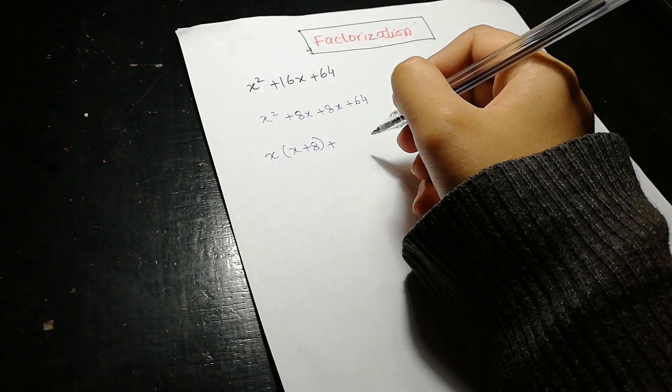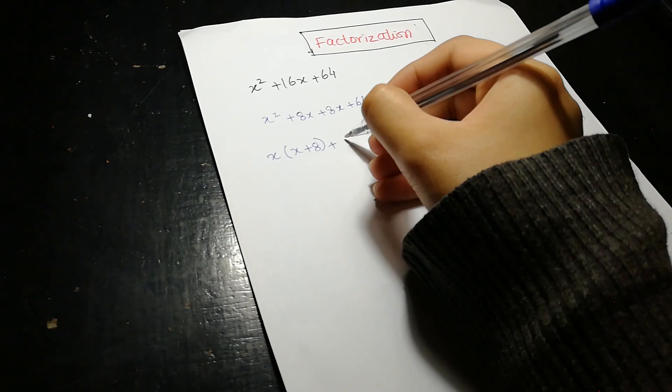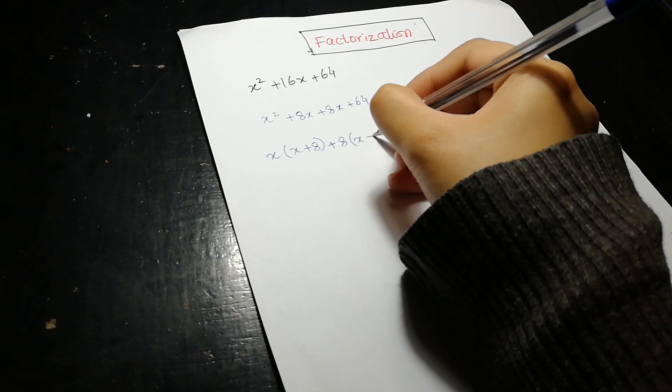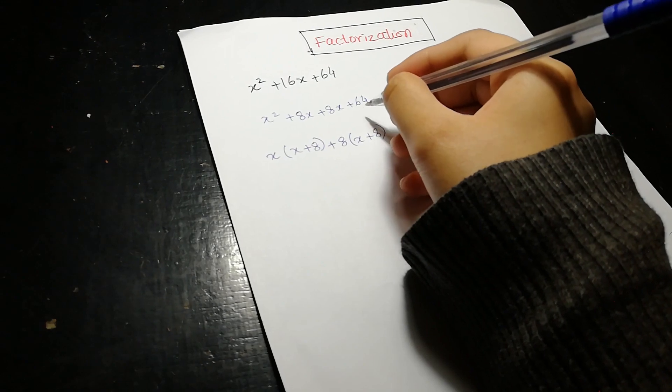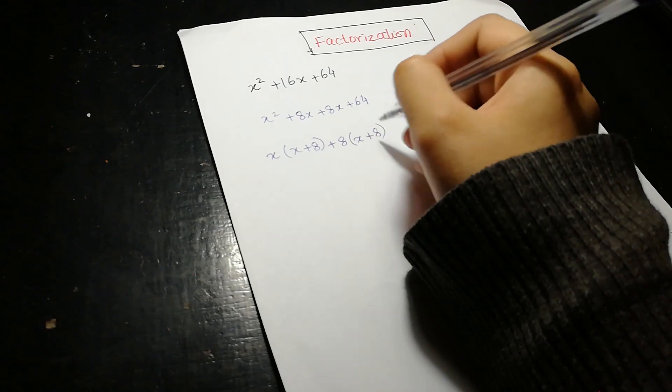And as we see, 8 is common in these two terms. The remaining are x plus 8, because 8 times 8 is 64, so we write 8 in the place of 64.